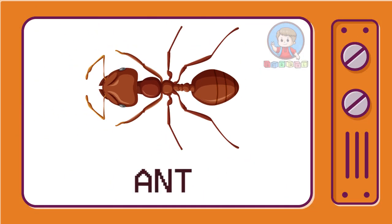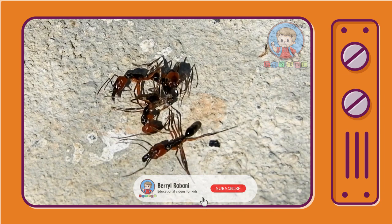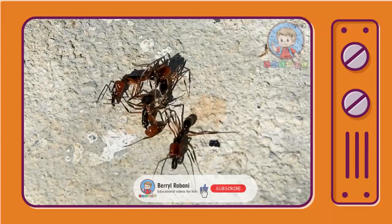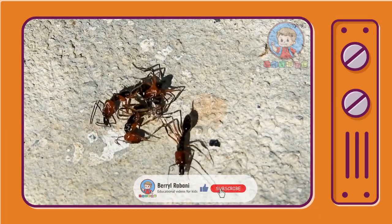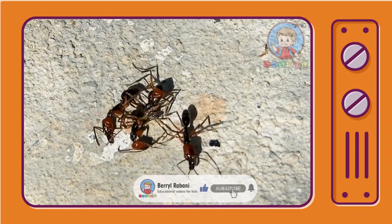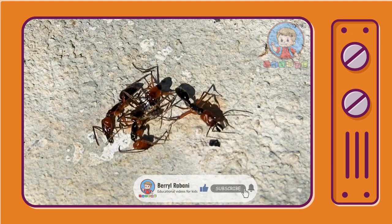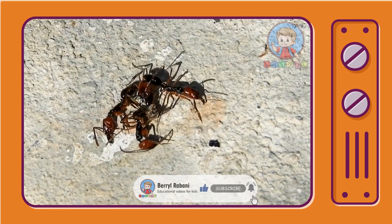Ant. Ants have more than 12,500 species, most of which live in the tropics. Most ants are known as social insects.